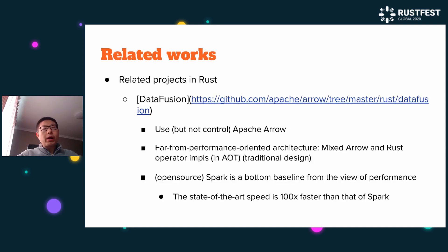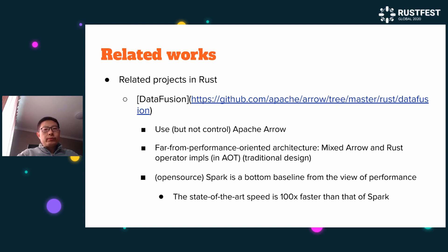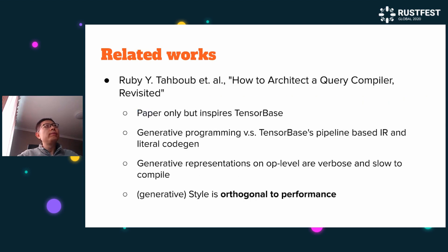Related work: you may compare some projects with TensorBase. One in Rust is called DataFusion, which uses Apache Arrow to construct an in-memory data query engine. The problem is it is still a traditional design, which is far from performance-oriented.